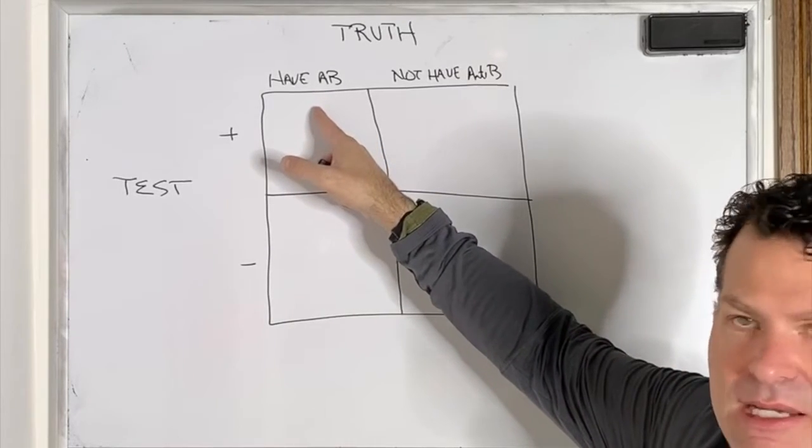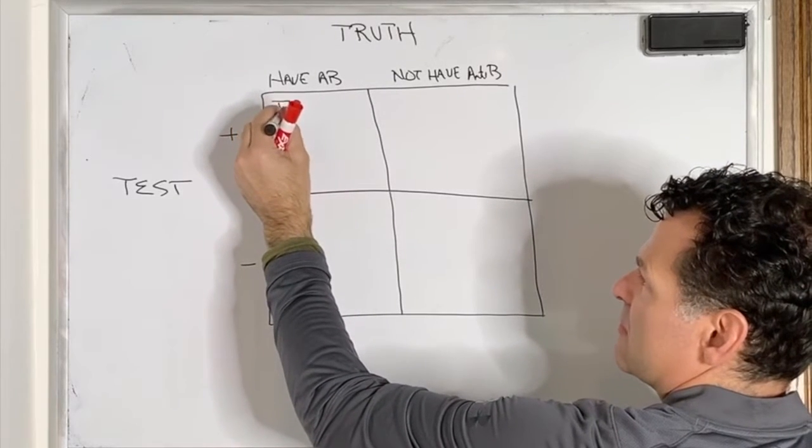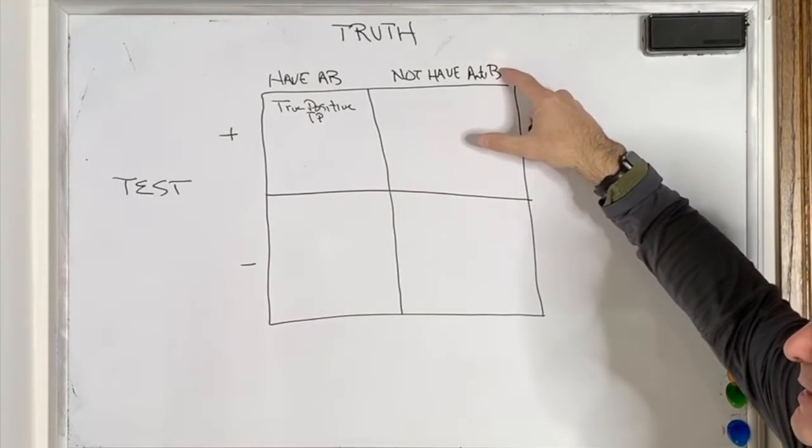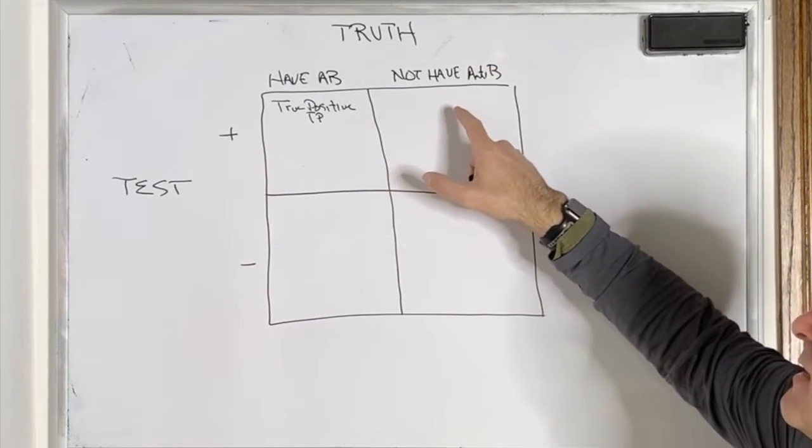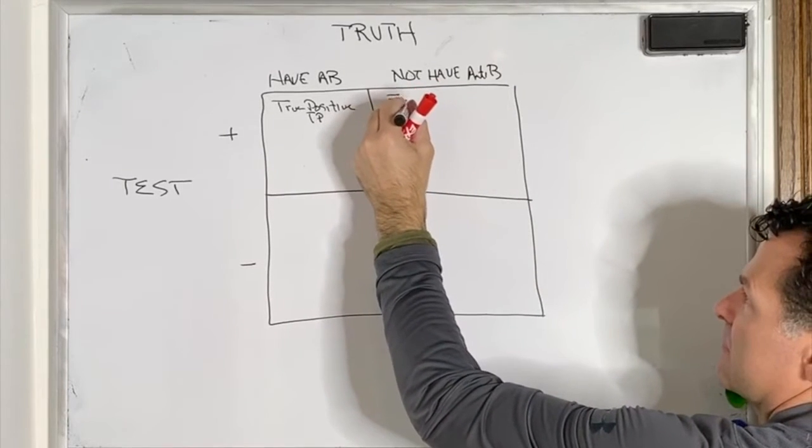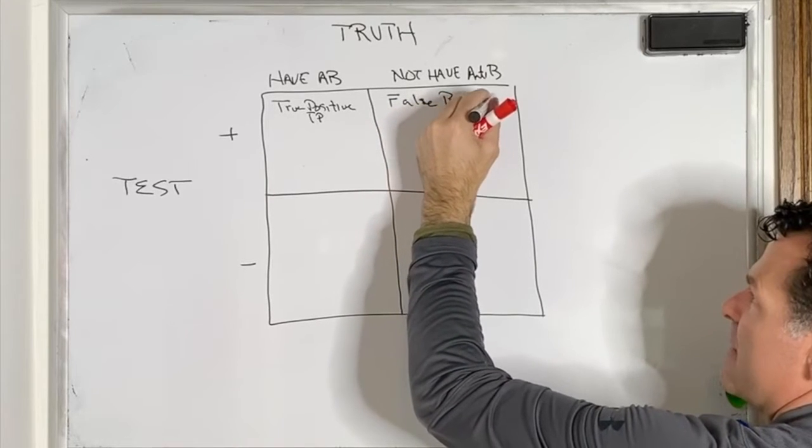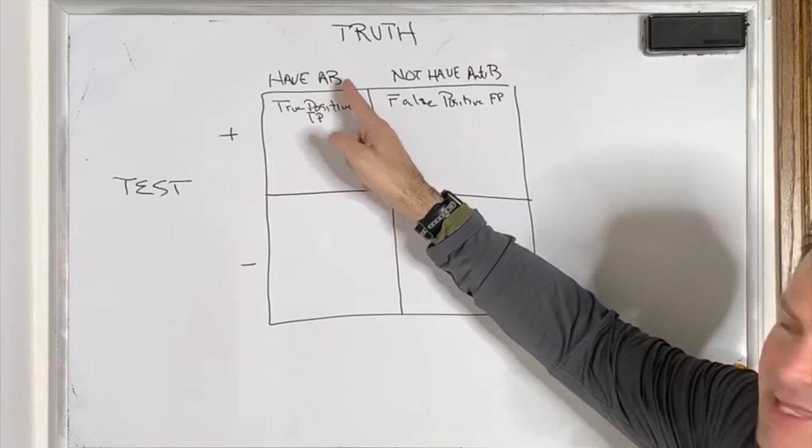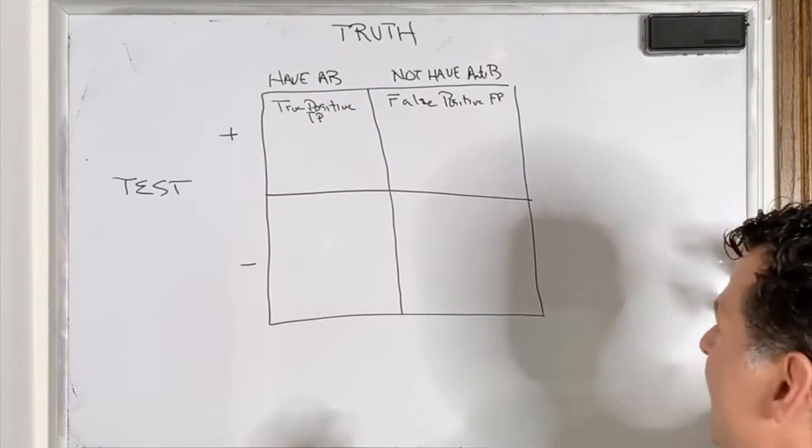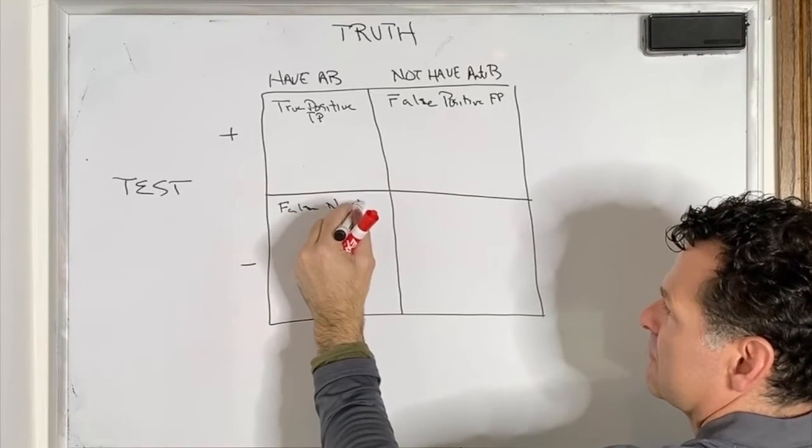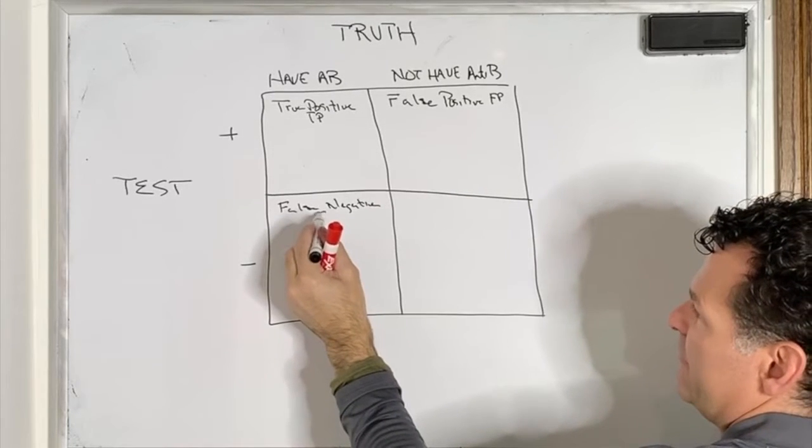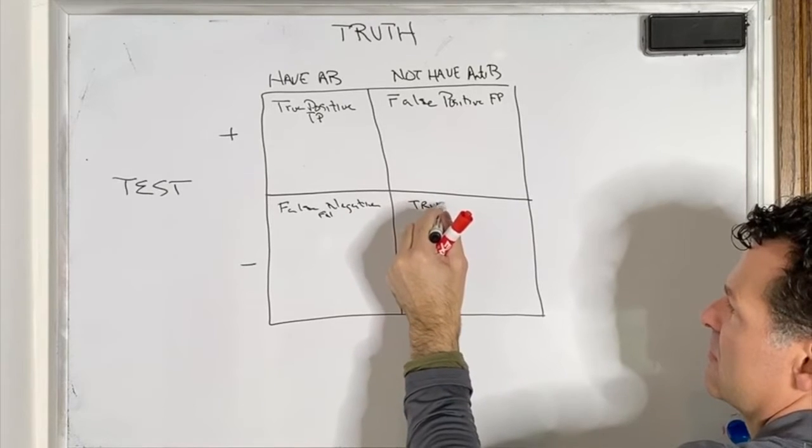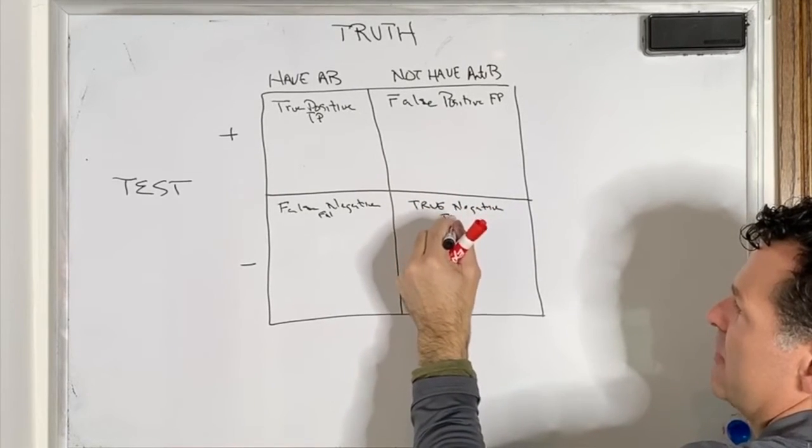They actually have the antibodies and they test positive, which would be a true positive or TP. They don't have the antibodies, but they do test positive, so that would mean that is a false positive or FP. In this case, we have a negative test, but they have the antibodies, so that would be a false negative or FN. And in this case, they do not have the antibodies and it's also a negative test, so it's a true negative or TN.